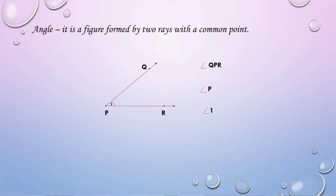We have three letters — the middle letter is what you call the common point. So therefore, angle QPR. And then we have angle P, or the number inside the arc, which is angle 1.